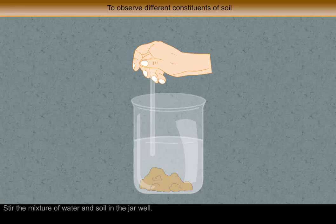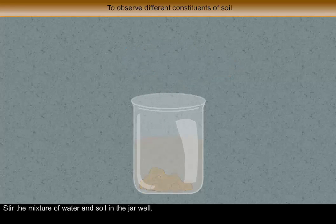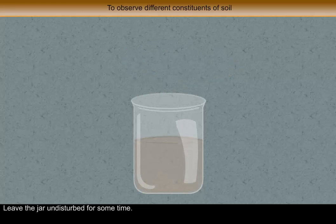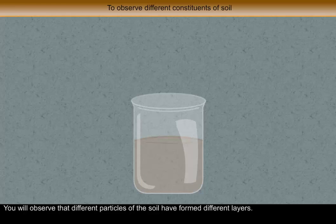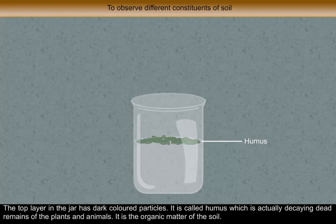Stir the mixture of water and soil in the jar well. Leave the jar undisturbed for some time. You will observe that different particles of the soil have formed different layers.